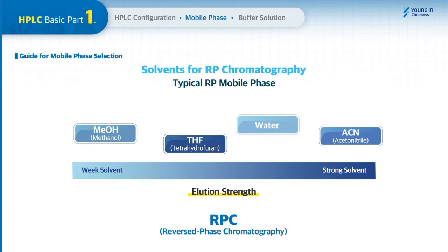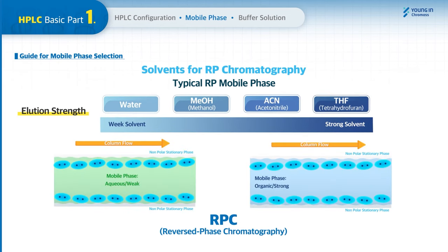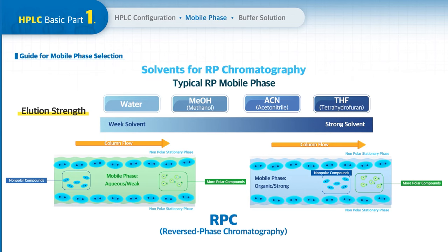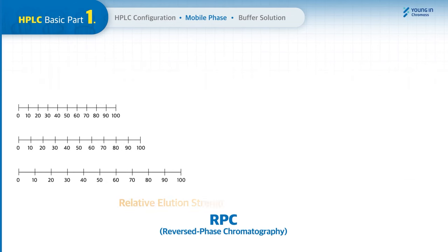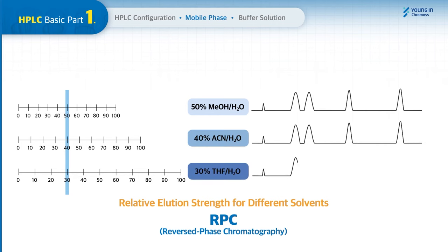Putting solvents in order of elution strength, water is a weak solvent and organic solvents are strong. Elution strength is related to polarity. If you use a weak mobile phase, nonpolar compounds are retained in the column longer. If you use a strong mobile phase or increase the amount of organic solvent, nonpolar compounds are eluted relatively earlier. This graph shows the relative elution strength for different solvents — for example, 50% methanol has the same elution strength as 40% acetonitrile or 30% tetrahydrofuran.